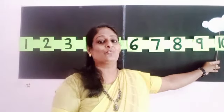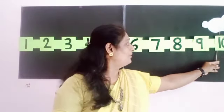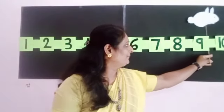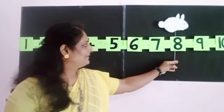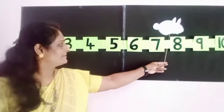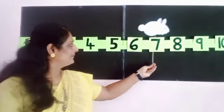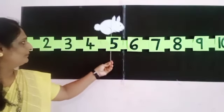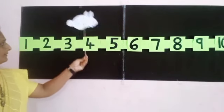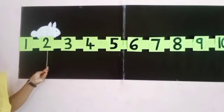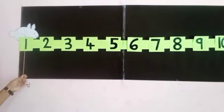Now the rabbit went back. Look how it is: 10, 9, 8, 7, 6, 5, 4, 3, 2, 1.